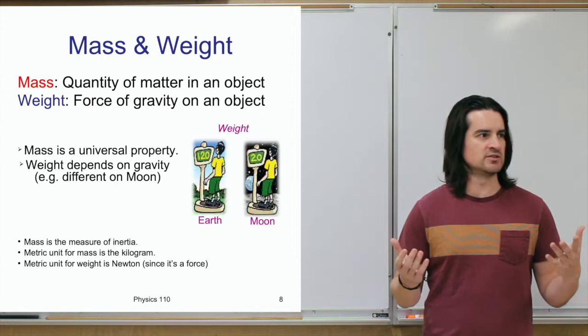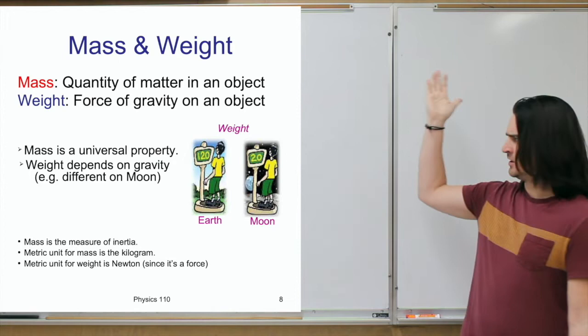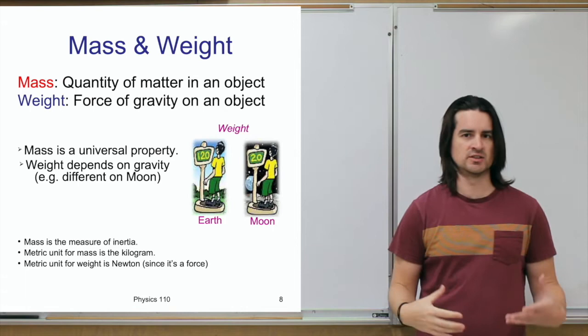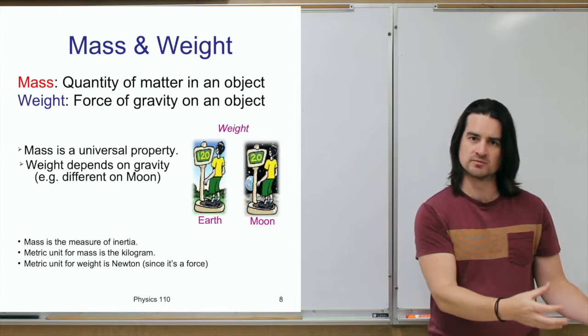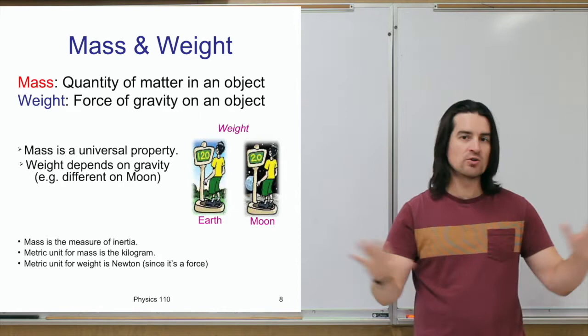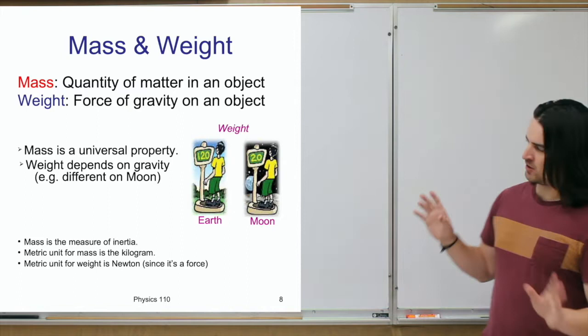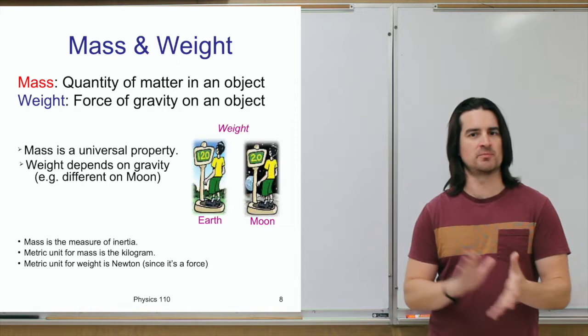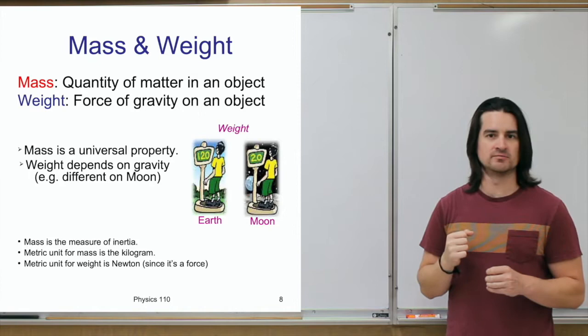Since the force of gravity can change depending on where you are — on Earth's surface it's one value, on the moon's surface it's about one sixth of Earth's gravitational pull — your weight changes accordingly. If you were next to the sun, gravity is much stronger. Floating in outer space with essentially no gravitational pull, you would be weightless. So weight varies from place to place depending on the situation, but mass does not vary.